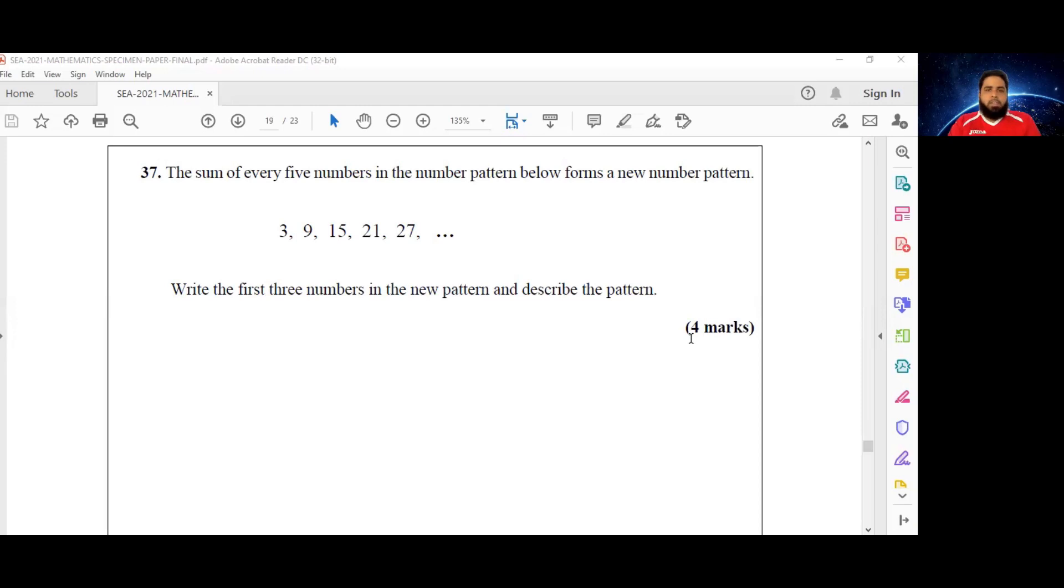Number 37 says: The sum of every five numbers in the number pattern below forms a new number pattern. Write the first three numbers in the new pattern and describe the pattern.